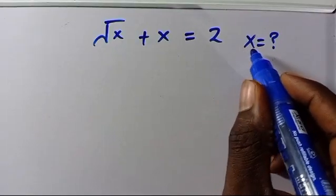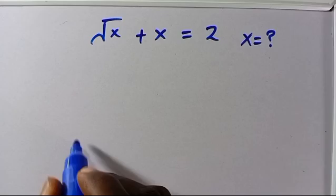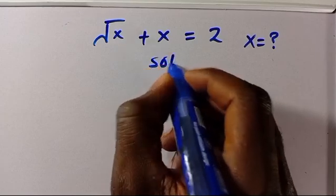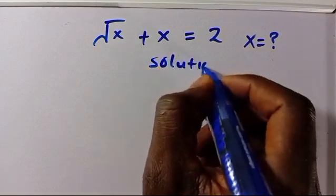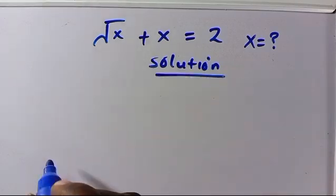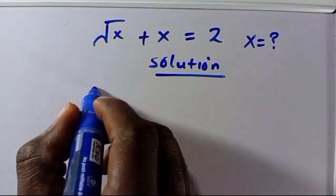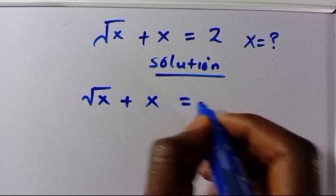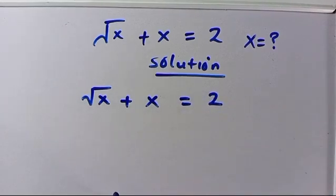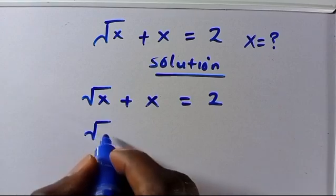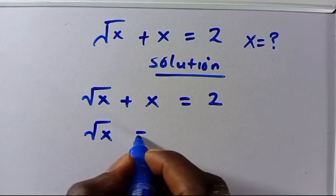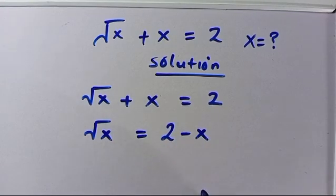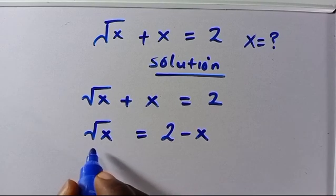Hello. What is the value of x, given that root x plus x equals 2? Let's find the solution. From here we have root x plus x equals 2. By taking this term to the other side, we have root x equals 2 minus x.